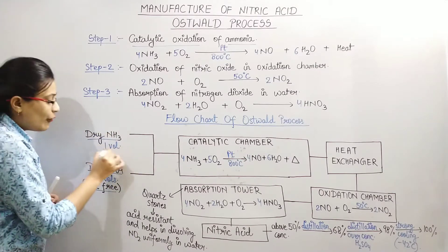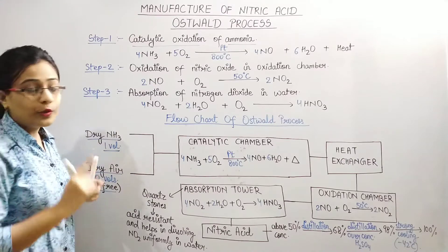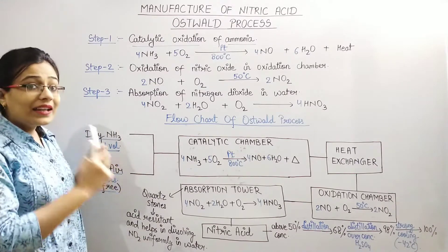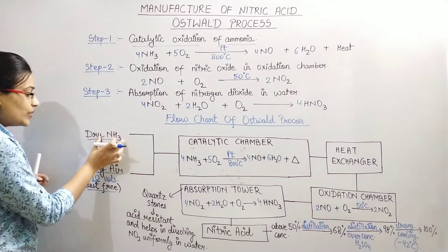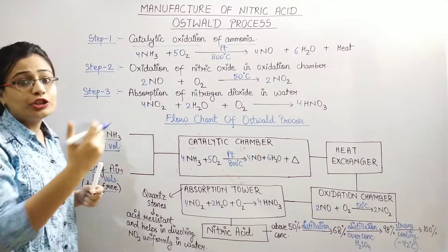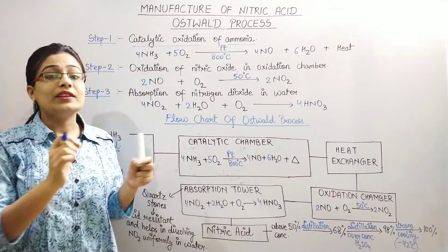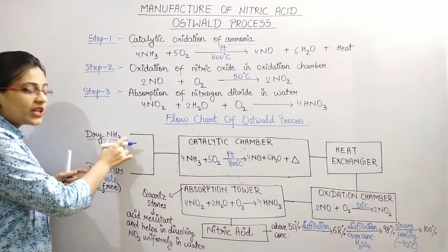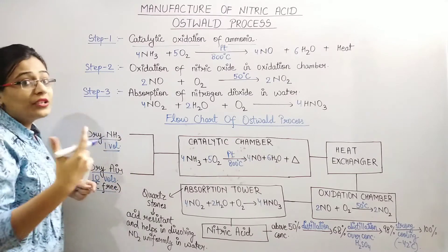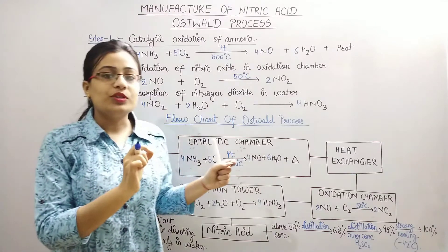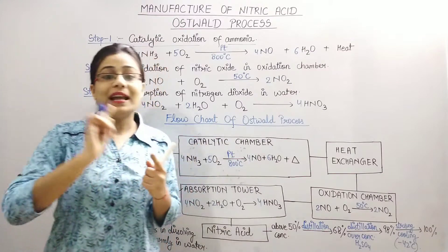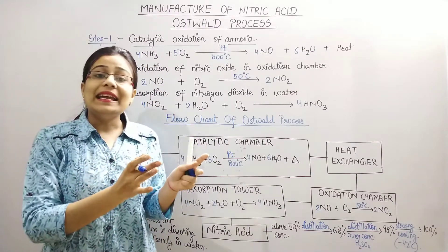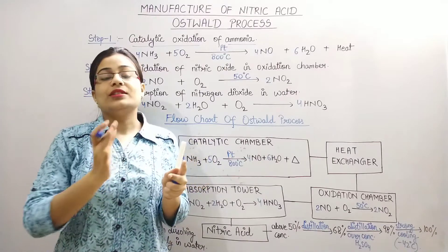The ratio of Dry Ammonia Gas to Dry Air by volume is 1:10. So if Ammonia is first, the ratio is 1:10, and if Air is first, the ratio is 10:1.